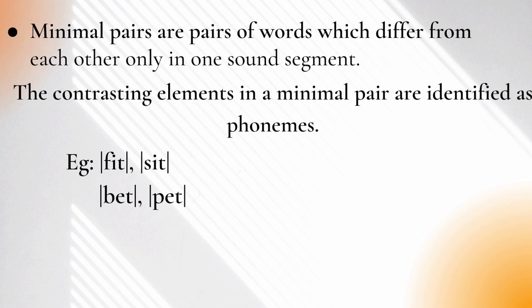Let me explain the term by using examples. Look at the pair of words 'fit' and 'sit.' When we divide the sounds of 'fit,' it will be /f/, /ɪ/, and /t/. And in 'sit,' it is /s/, /ɪ/, and /t/. There is only one difference in these words — the first word has /f/ and the second has /s/. The difference is only in one sound segment. Look at another example: 'bet' and 'pet.' In the first word it is /b/, and in the latter it is /p/.